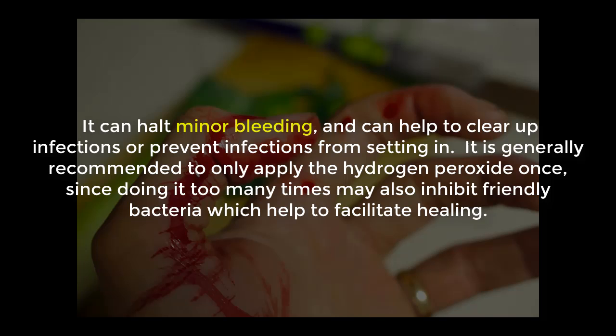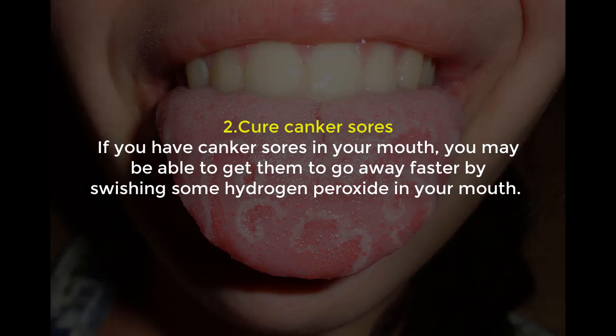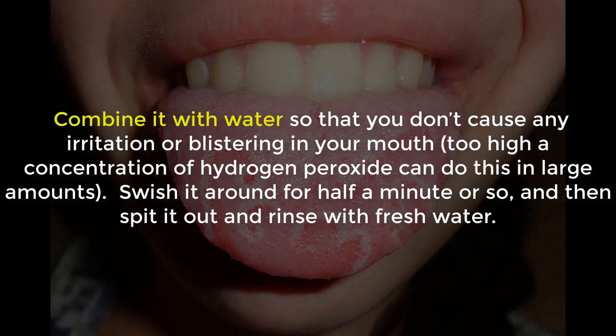Number two: cure canker sores. If you have canker sores in your mouth, you may be able to get them to go away faster by swishing some hydrogen peroxide in your mouth. Combine it with water so that you do not cause any irritation or blistering — a high concentration of hydrogen peroxide can do this in large amounts. Swish it around for about half a minute or so and then spit it out and rinse with fresh water.